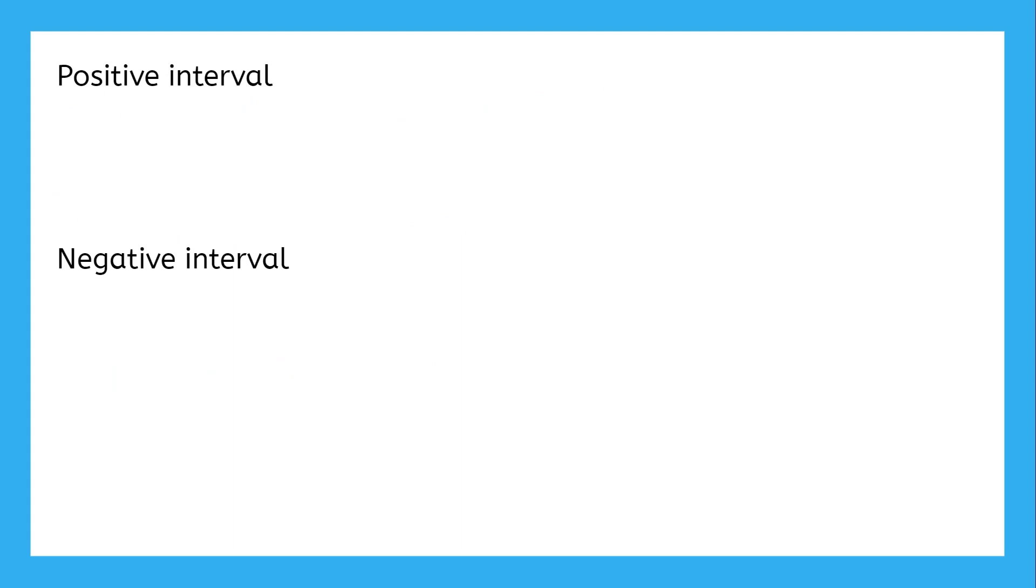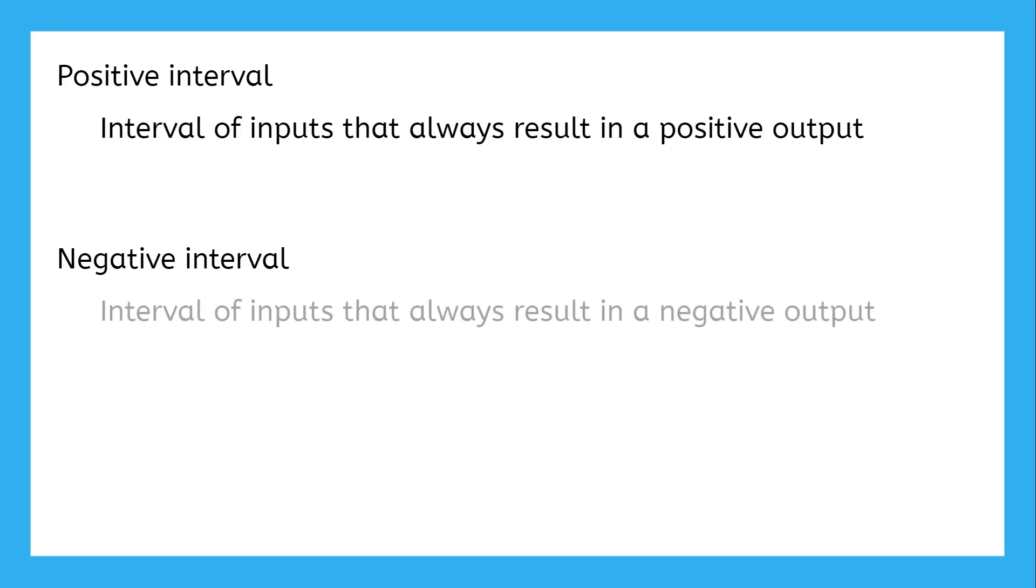The good news is that the definitions this time are much easier to follow. A positive interval is the interval of inputs that will always result in a positive output, and a negative interval is the interval of inputs that always result in a negative output.